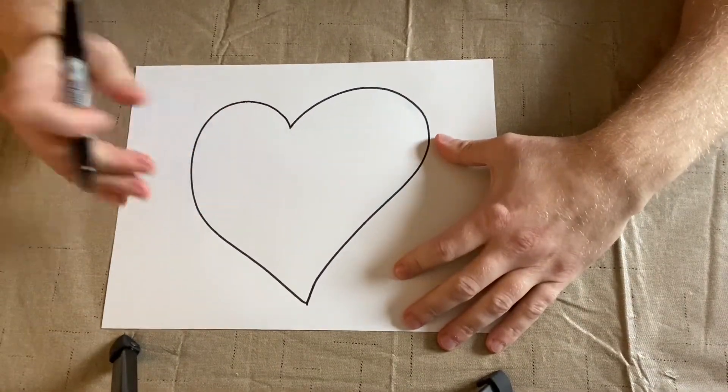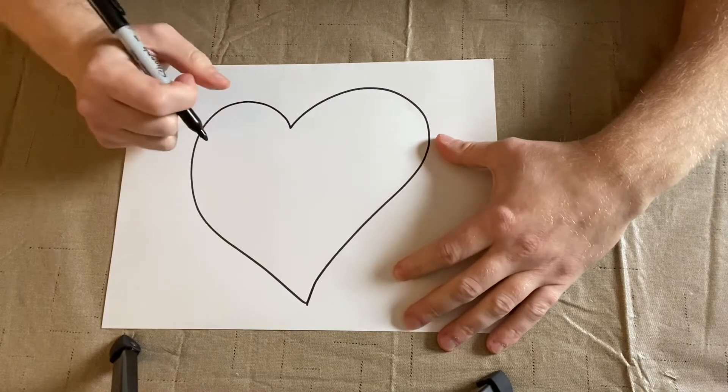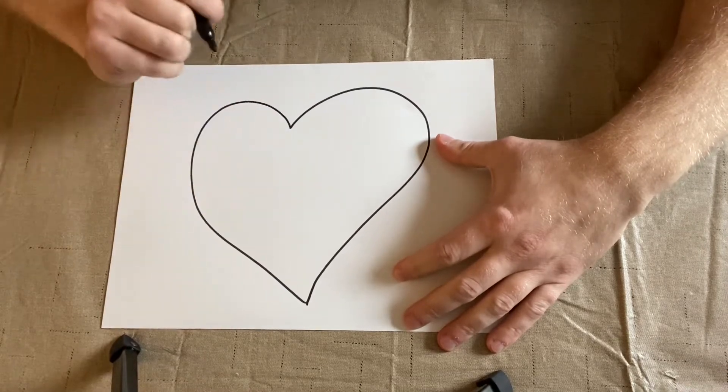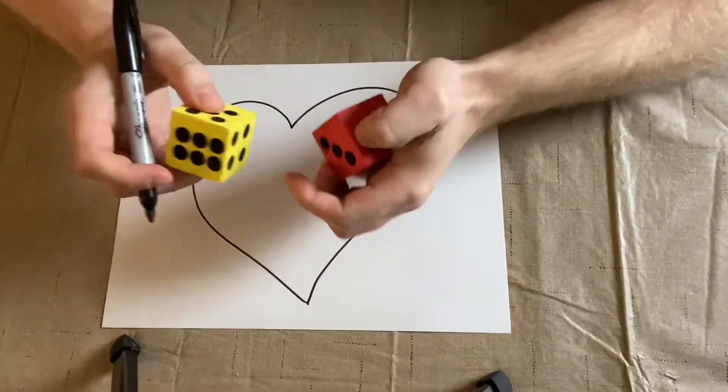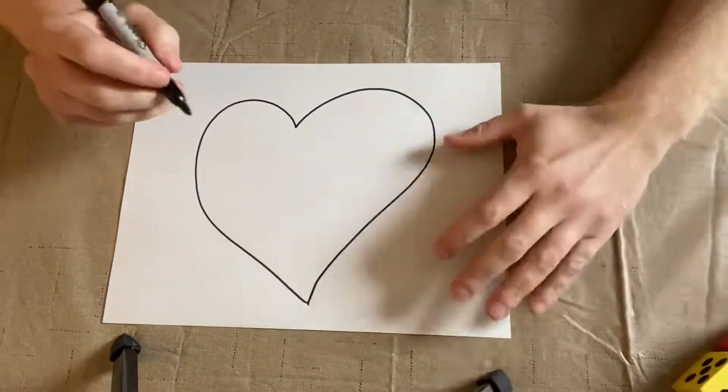So first, parents draw a shape for your kids. It can be a heart, it can be a circle, it could be a square. The shape really doesn't matter. And what we're going to do is we're going to add dots just like on the dice to the heart. So take a look.